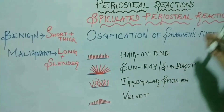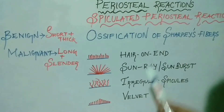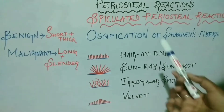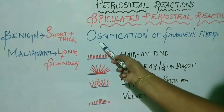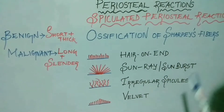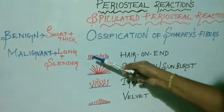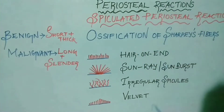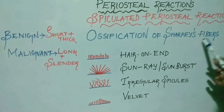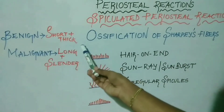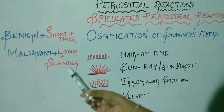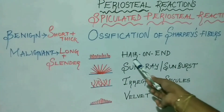Spiculated periosteal reaction is an aggressive periosteal reaction representing a more rapid underlying pathological process. These bony spicules originate from ossification of Sharpey's fibers — tiny fibers which connect the periosteum to the bone. These fibers become stretched out perpendicular to the bone as a result of the underlying pathological condition, producing bony spicules upon ossification. Bony spicules are short and thick in benign conditions and long and slender in malignant conditions.